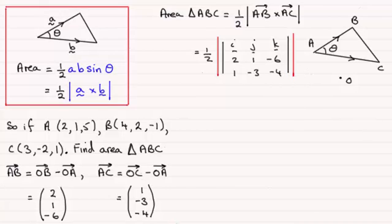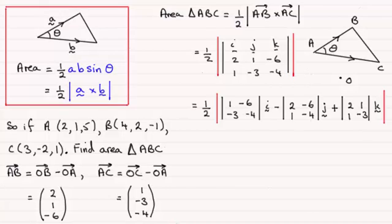Now to save time I've worked this out, expanded it. It's going to be half then times the magnitude again then of this determinant. So when we expand that we get i times the determinant (1,-6; -3,-4) minus j times the determinant (2,-6; 1,-4), and then plus k times the determinant (2,1; 1,-3).